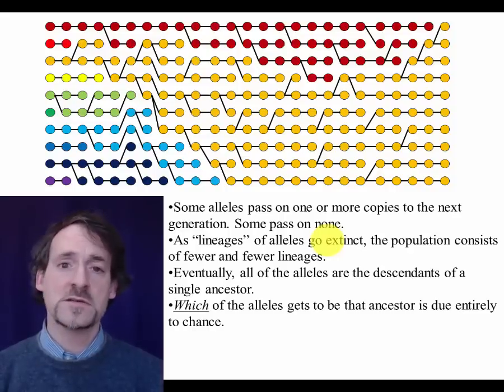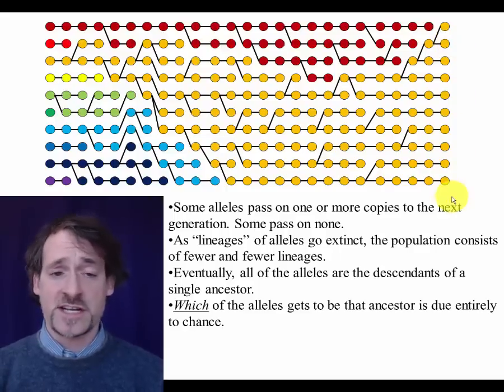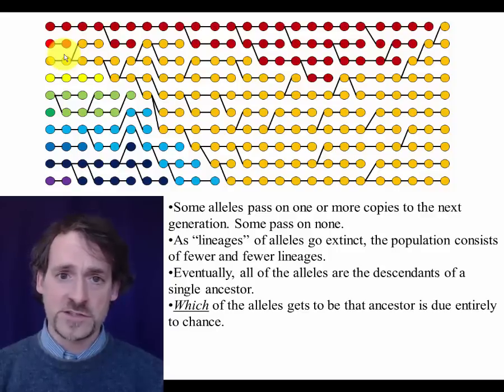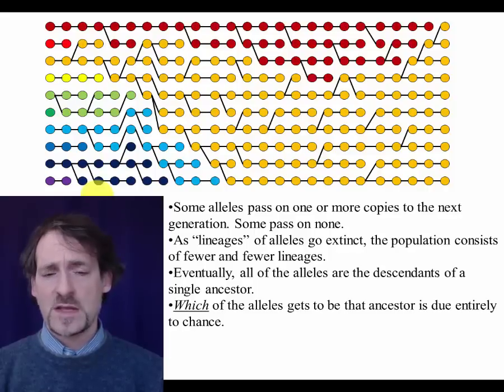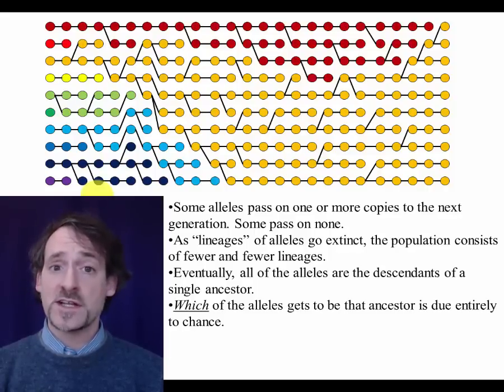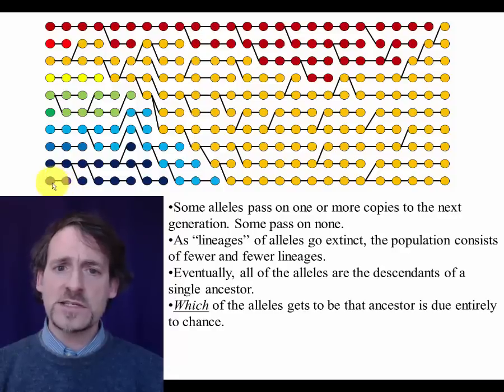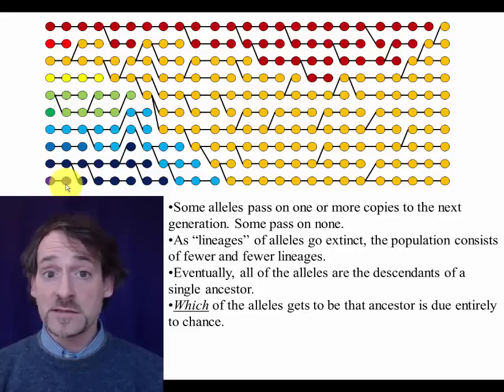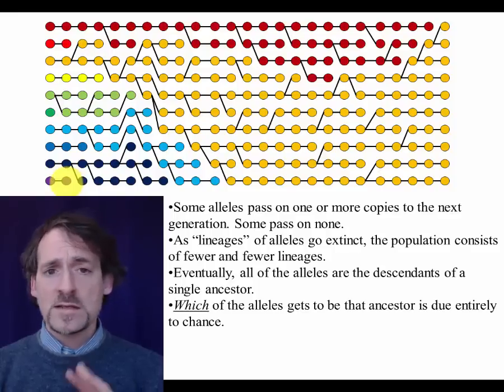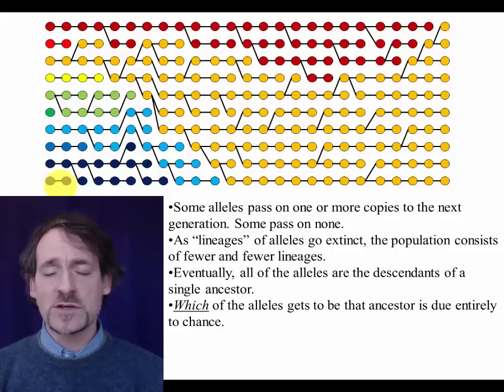Which of the alleles happens to be the descendant of the entire population at this endpoint is totally up to chance. It's not, again, that one of these alleles had an advantage over the others. It's just that this allele was luckier than the rest. So that's the first thing I want you to know about genetic drift. Genetic drift removes genetic variation from a population. What happens is that each one of these alleles, each one of these colored lineages, can go extinct. But once extinct, it never comes back. It can't. It's gone.